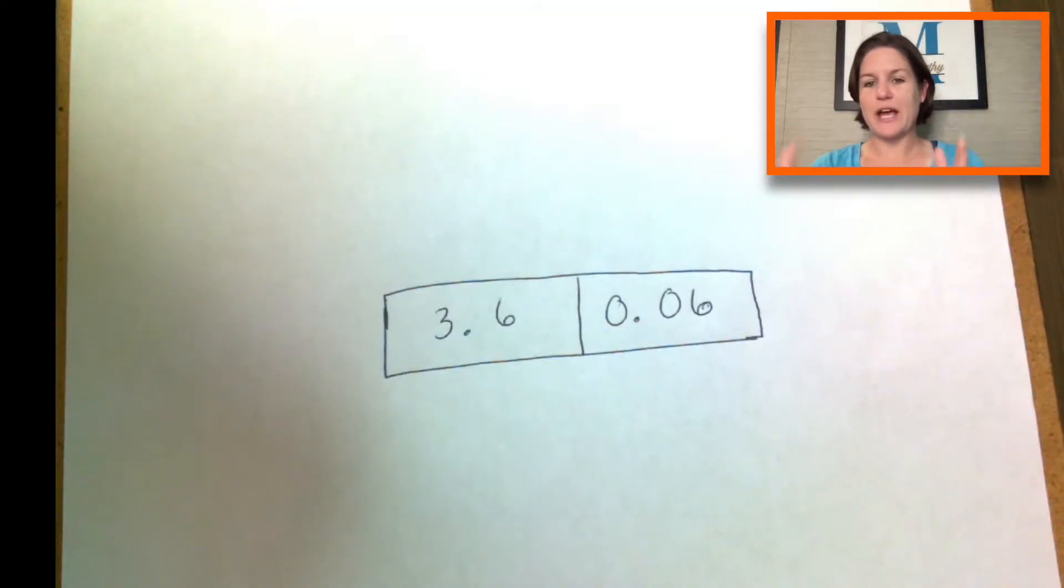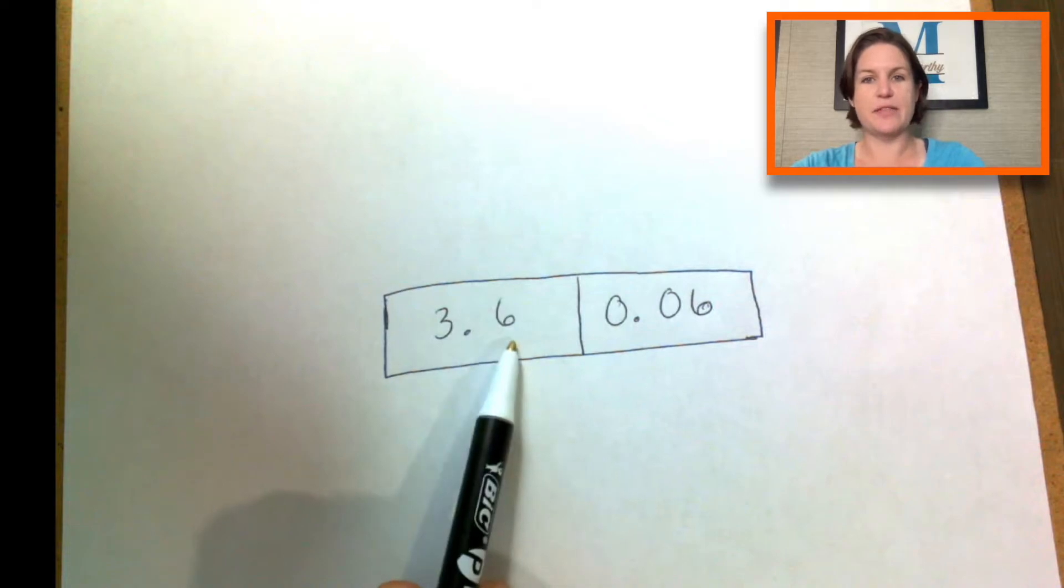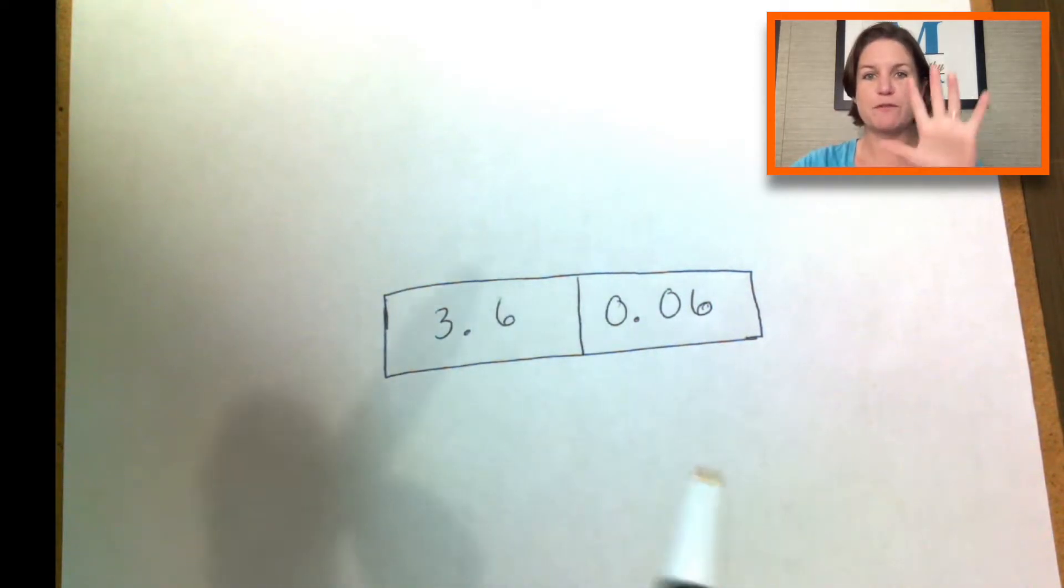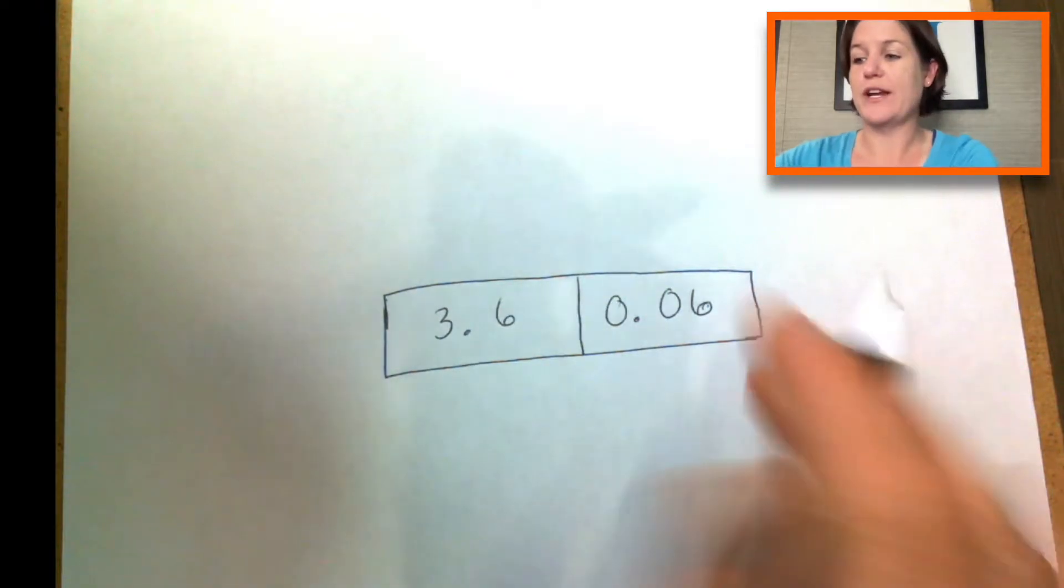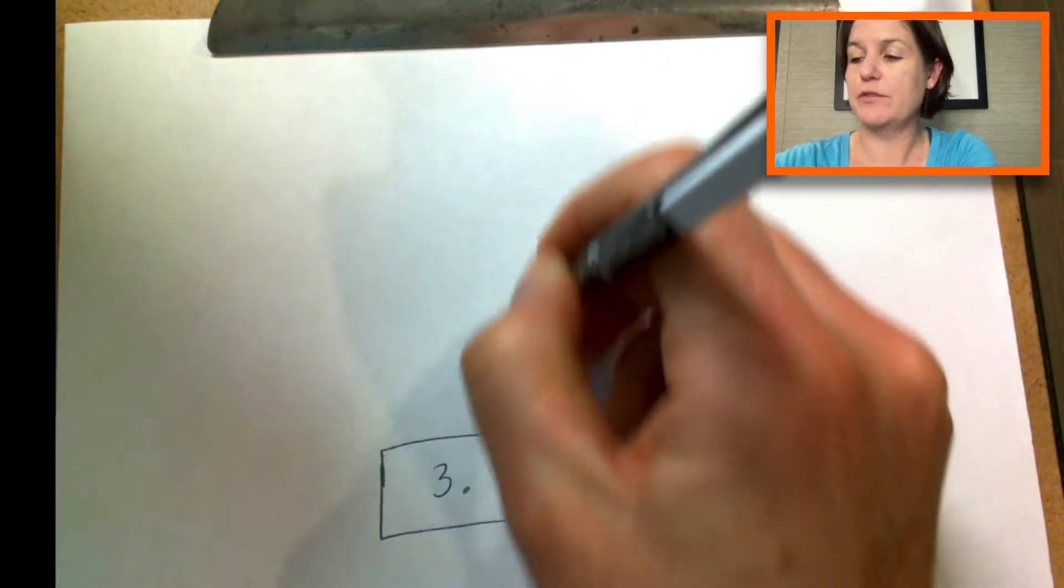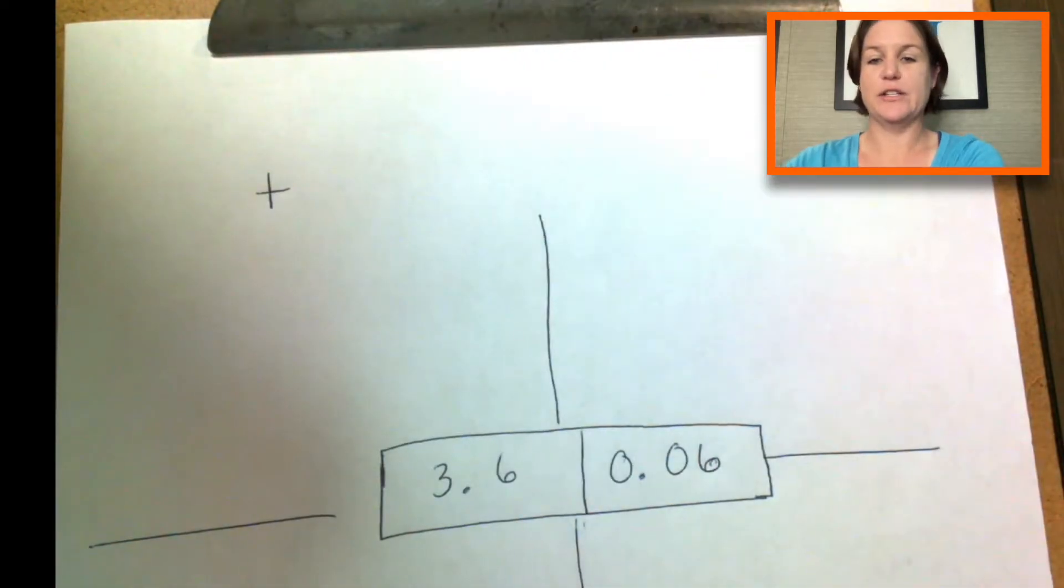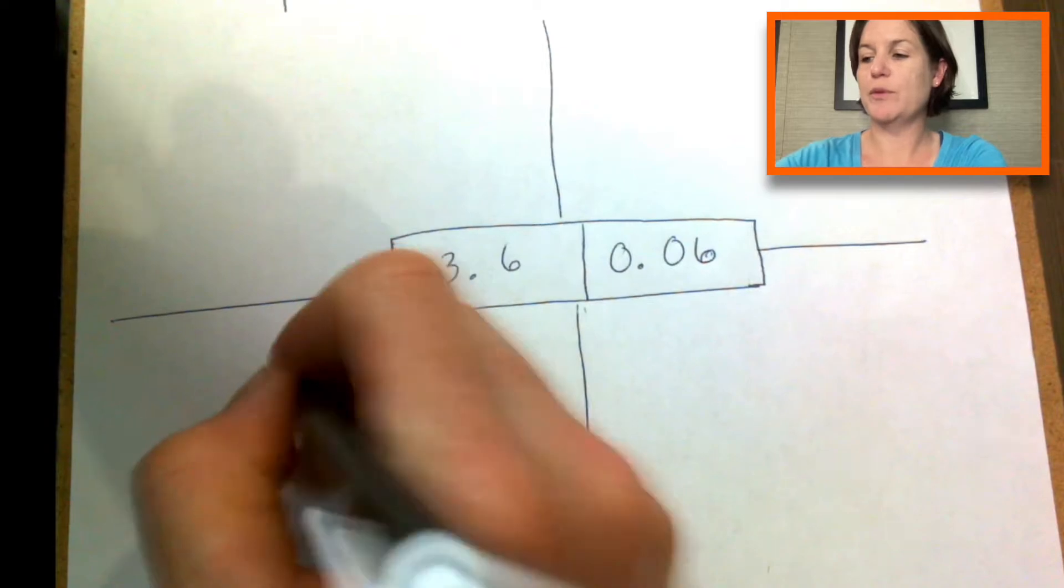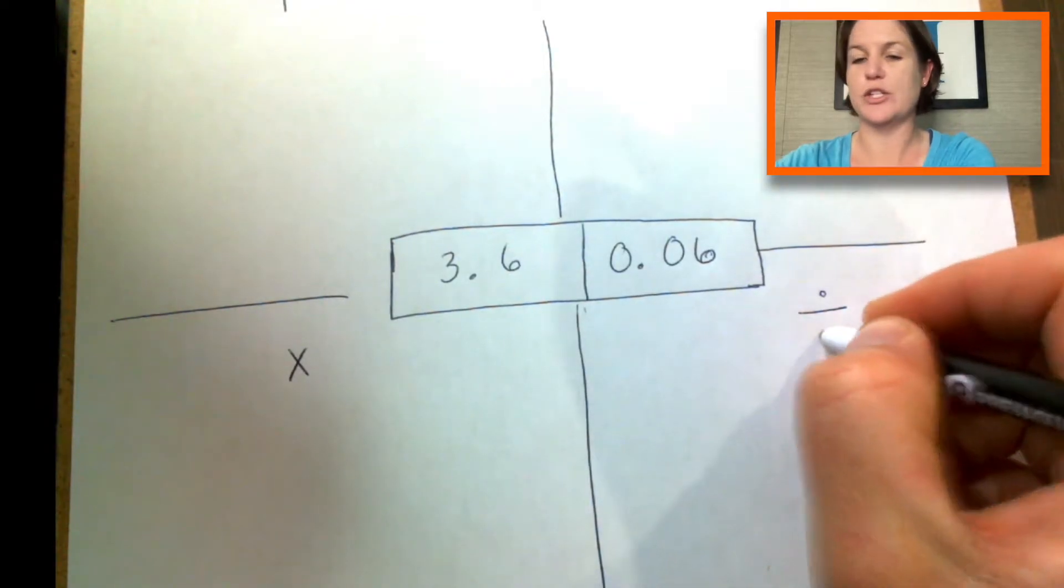So let's go ahead and break down some strategies for remembering what you do with a decimal for fifth grade today. Let's imagine that we have 3.6 and we have 0.06, and we're going to do the four different operations with them right now. We have addition, we have subtraction, we have multiplication, and we have division.